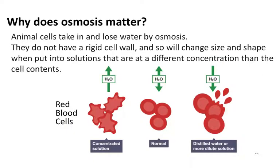Why does osmosis matter? That's how our cells access the water they need for metabolism. Animal cells, unlike plant cells, don't have a rigid cell wall, so they're very sensitive to changes in tonicity — changes in concentration of the extracellular or tissue fluid. The reason we use isotonic saline in IVs is because you would destroy the most common cell in the blood if you put in a hypertonic or hypotonic solution, and there's only so much water the inside of the cell can accommodate before the cell membrane is going to disintegrate.